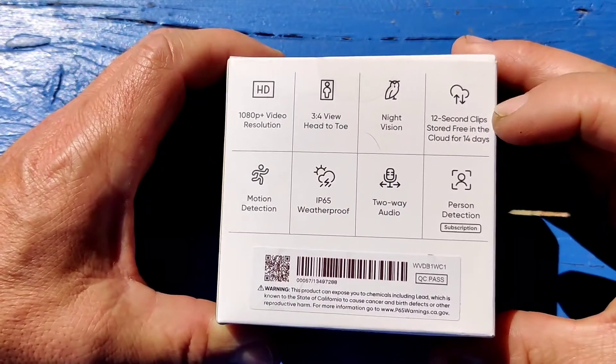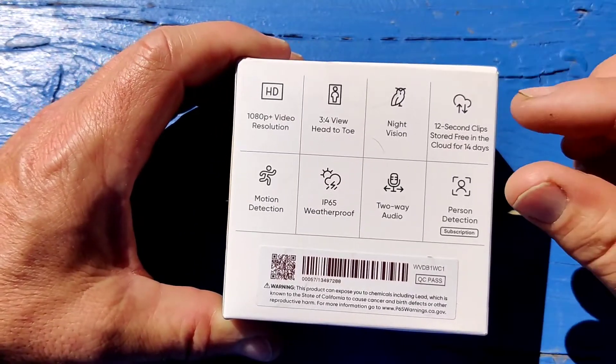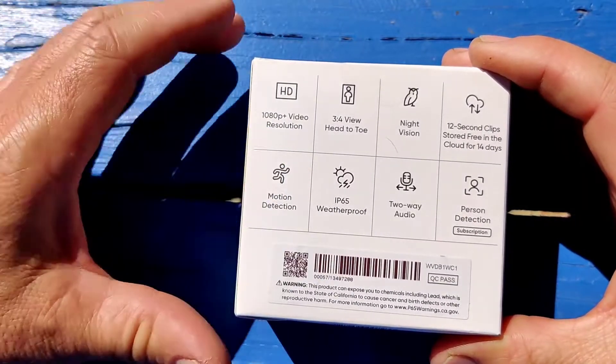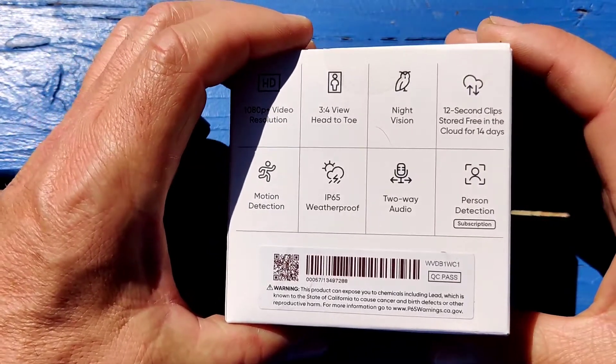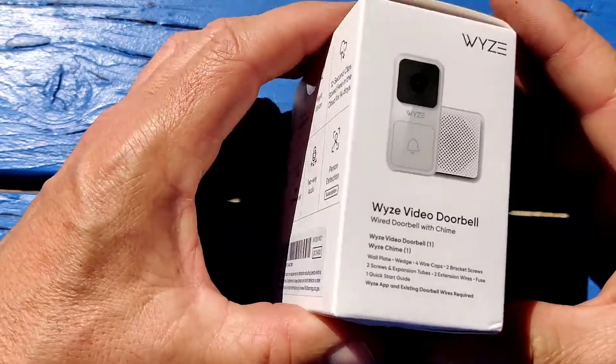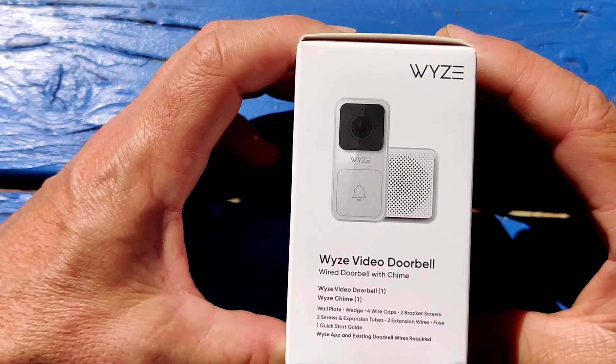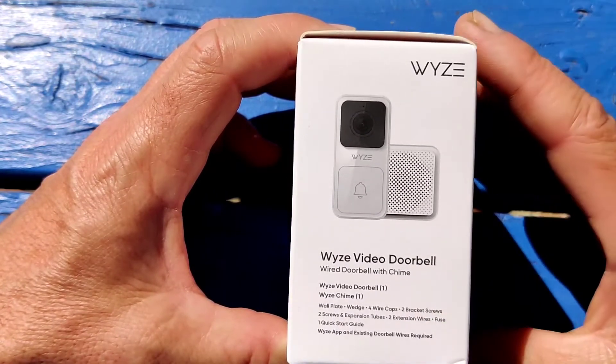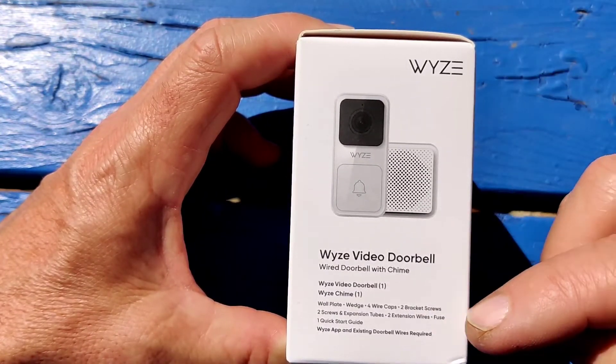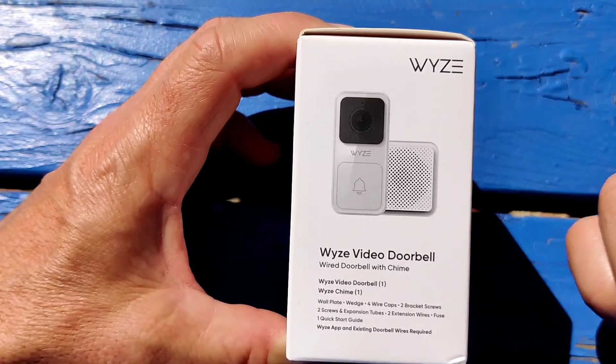Total second clip stored. Motion detection, waterproof, two-way audio, person detection with a subscription. I have video subscriptions online. Comes with the Wyze video doorbell, one Wyze chime, wall plates, wiring caps, bracket screws, extension wires, fuses, and quick start guide.